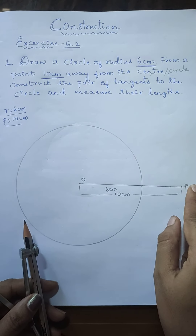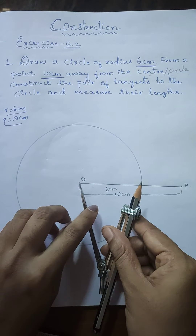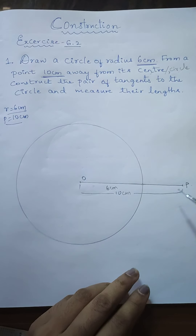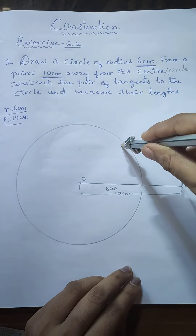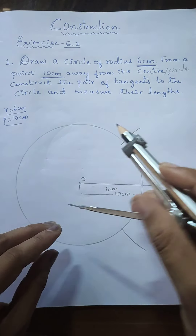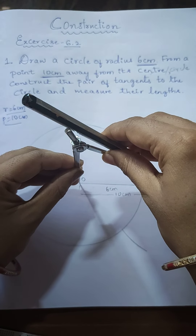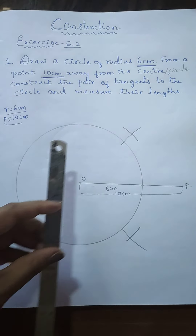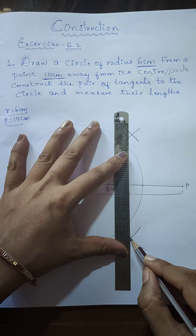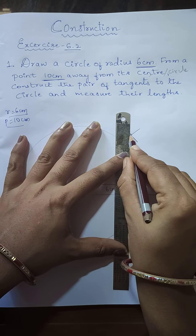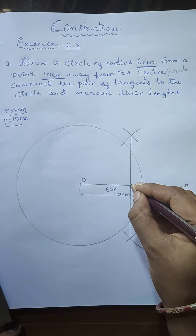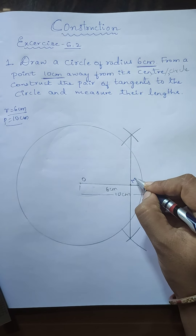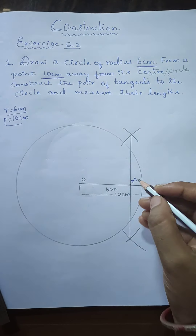The next step is to draw the perpendicular bisector for the line OP. To draw the perpendicular bisector, take more than half the length and cut arcs from both point O and point P. We get the intersecting points and draw the perpendicular bisector. Name the midpoint as M.